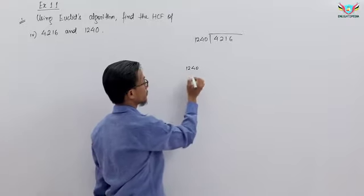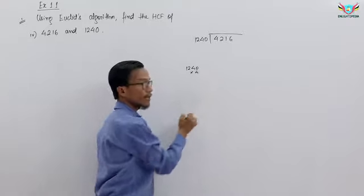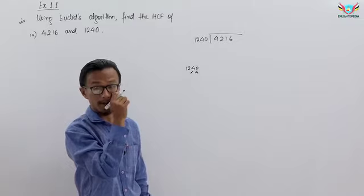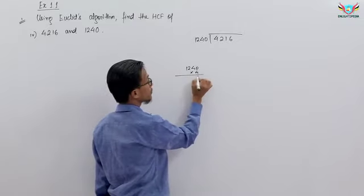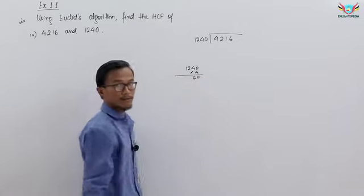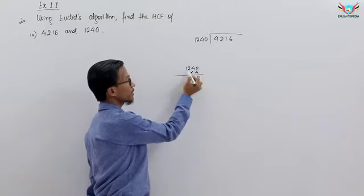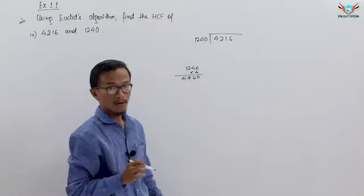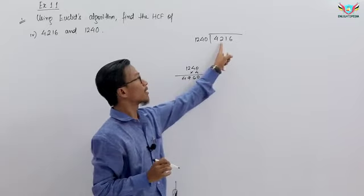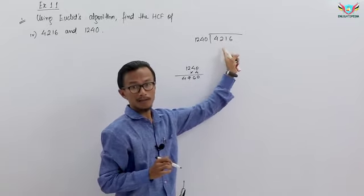So let's start with 4 here. This will be 0. This is 4 times 4, how much? 16, 1 carry. 4 times 2 is 8, then 9, then last one is 4. So if you have 4960, and then you can see what is 4216.